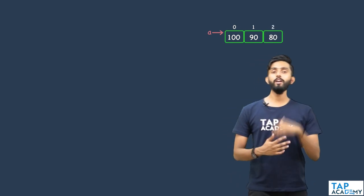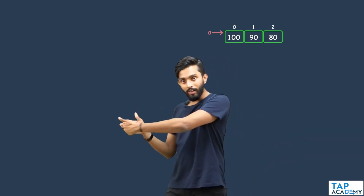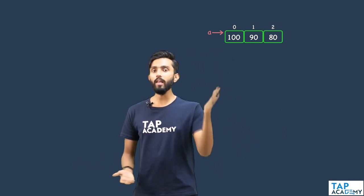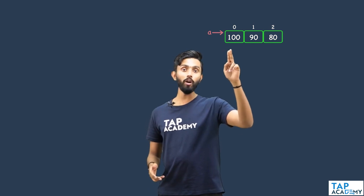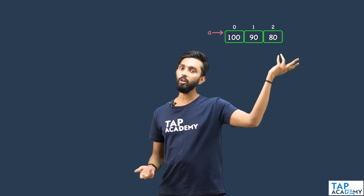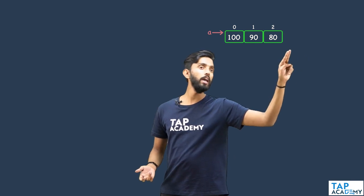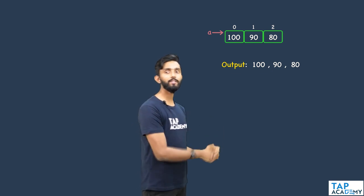Let's take another example: 100, 90, 80 — sorted in descending order. If it is sorted in descending order, every element to its right will be lesser. So 100, 90, 80 — every element is a leader. In a descending sorted array, every element is a leader.